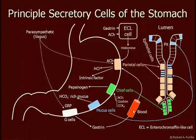Gastrin circulates through the blood and triggers parietal cells to secrete acid and also triggers ECL cells to secrete histamine. Histamine also triggers acid secretion from parietal cells, and the parasympathetic nervous system, ACH through muscarinic ACH receptors, triggers acid secretion.